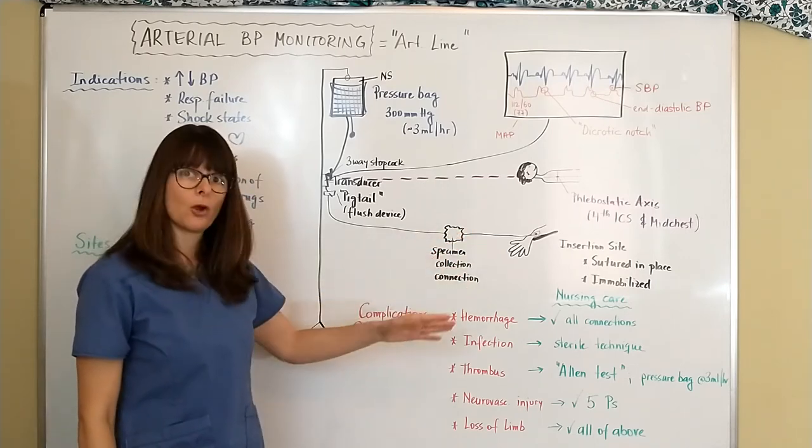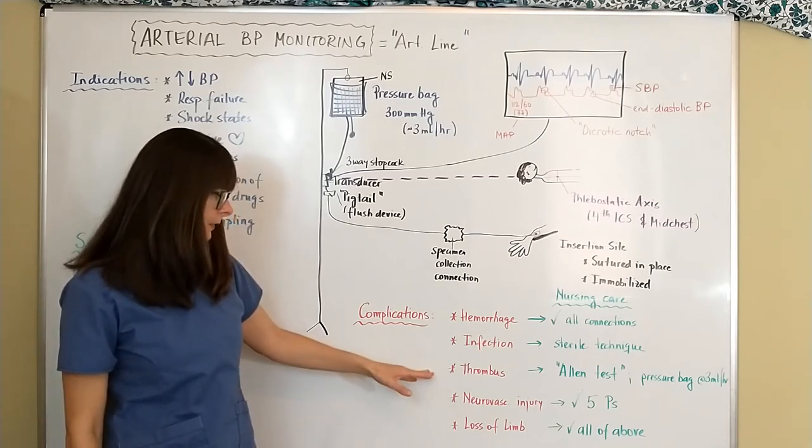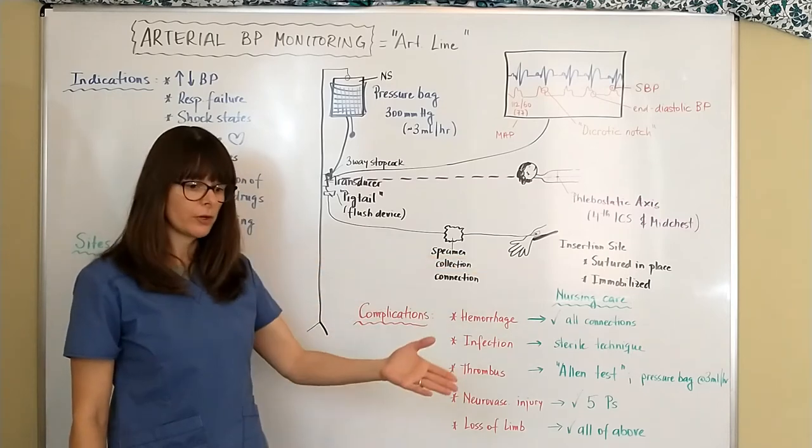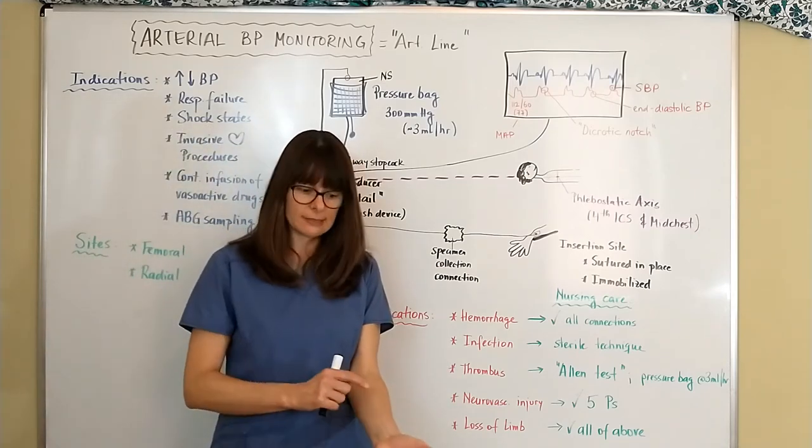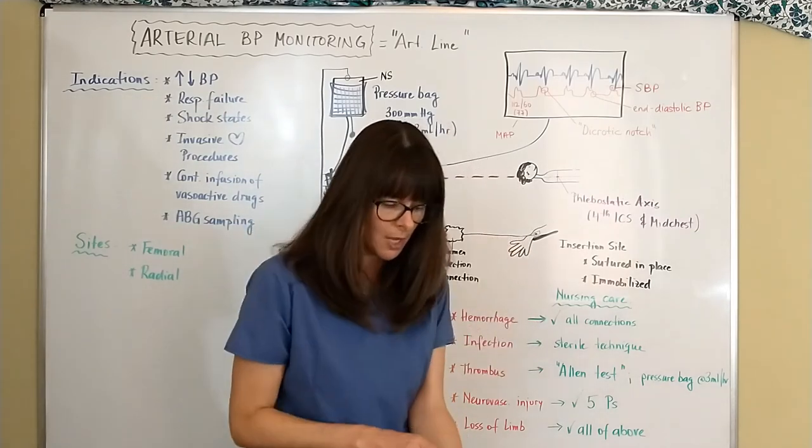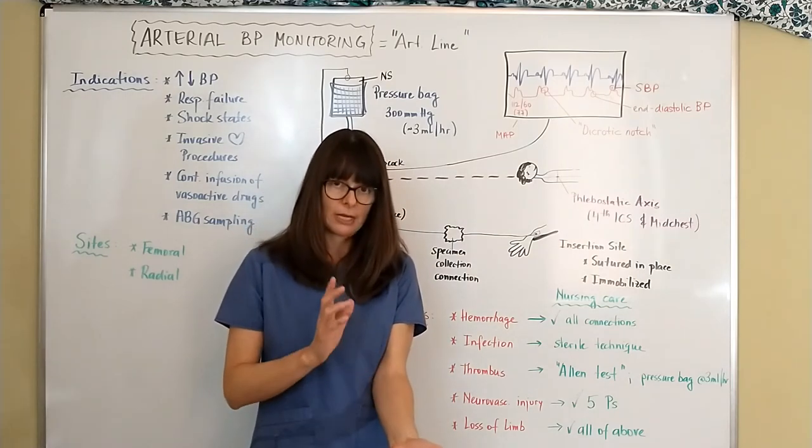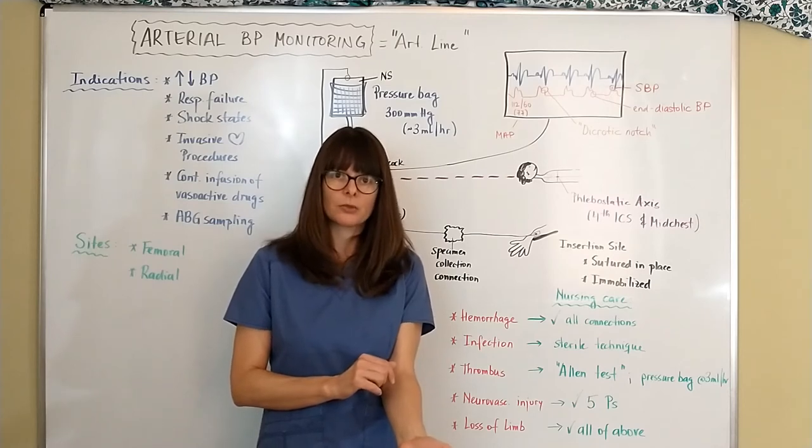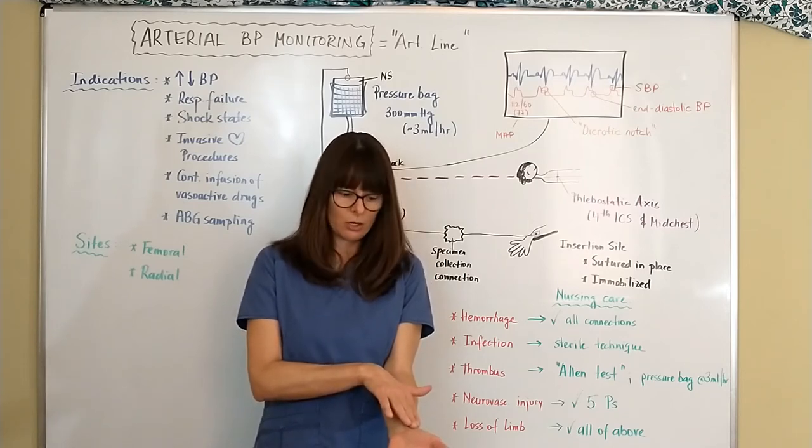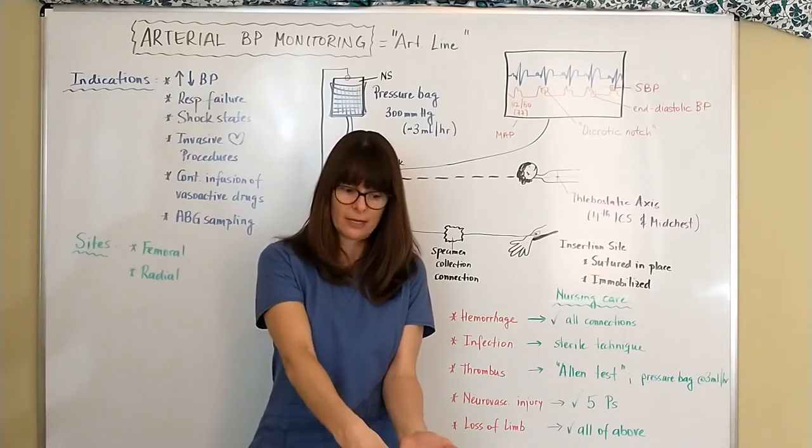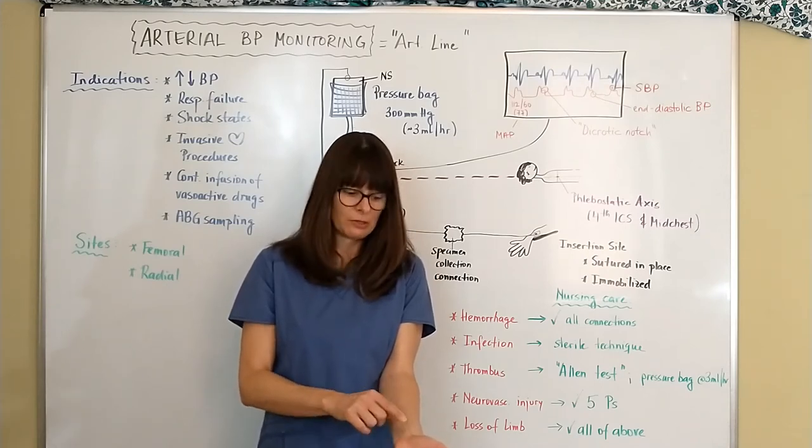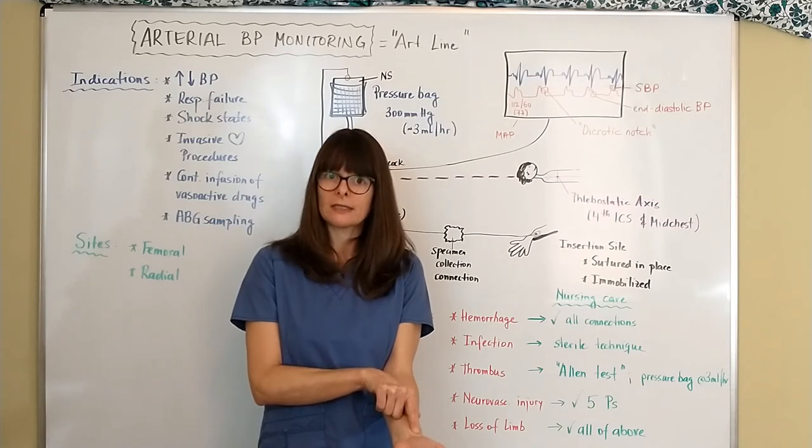And then a thrombus can form, so before the line is inserted in this case in our patient's radial artery, we need to make sure that the radial artery is patent. Remember that your hand gets supplied with two different arteries, we have the radial and the ulnar arteries. Typically we check our radial pulse and like I said these art lines are inserted into the patient's radial artery. Now if there was something to go wrong like if this line was to clot off we would have trouble with perfusion to the rest of the hand, which is why the ulnar artery is so important. So we want to make sure that the ulnar artery is patent before we even insert this art line.